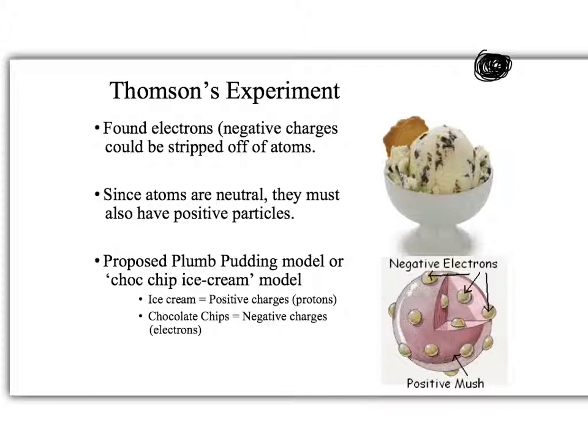Through an experiment I'll show you in a minute, he figured out that there are little parts of an atom known as electrons, and they have a negative charge. So there's a negative charge in an atom. It turns out that overall there is no charge in an atom. So an atom itself doesn't have a charge, but pieces of it are negative.